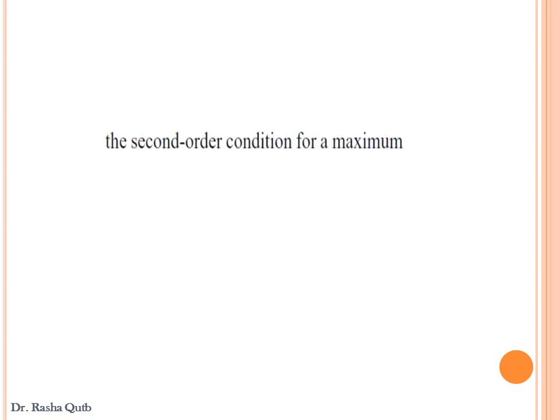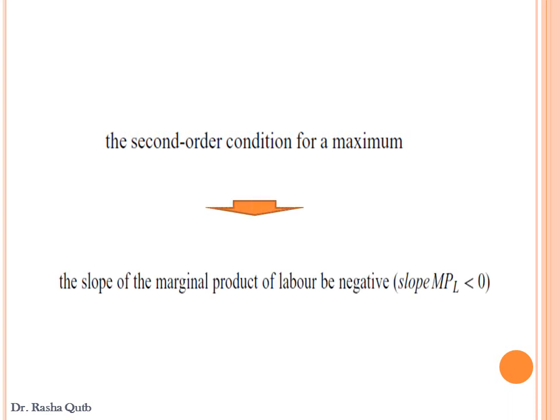We call this first order condition the necessary condition for profit maximization. In order to confirm that profit is maximized, we also need the second order condition — the sufficient condition — which requires that the slope of the marginal product of labor must be negative.